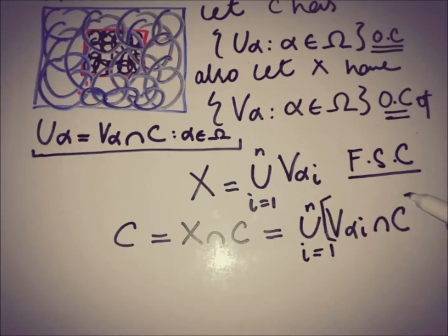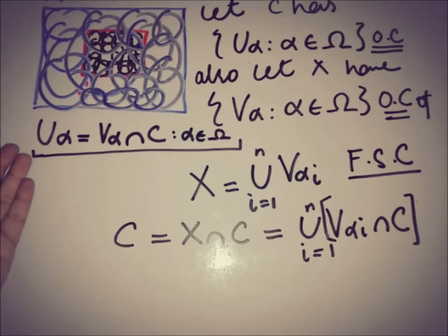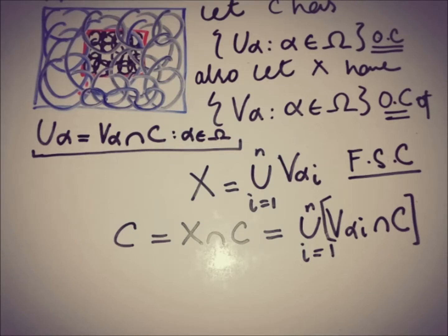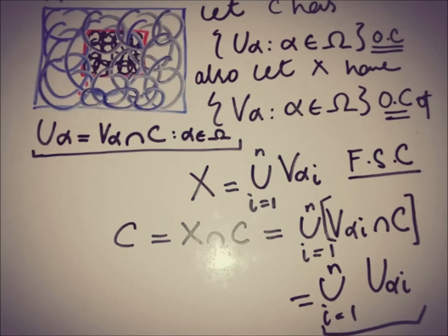We can place brackets here because the union works only with V_alpha_I's — these are the finitely many open sets in X whose union is X. For each open set in X, when we take the intersection with the closed set C, then we have U_alpha, that is an open set in C. So this condition — V_alpha_I intersection with C — means we have U_alpha_I's, the union from 1 to N. These are finitely many open sets in the set C, and this union is equal to C. This implies that this is the finite subcover of the closed set C.